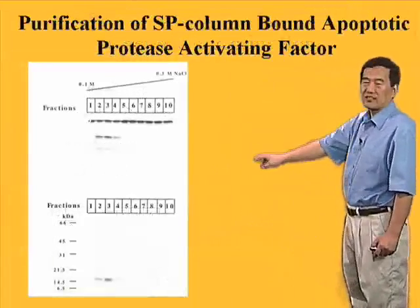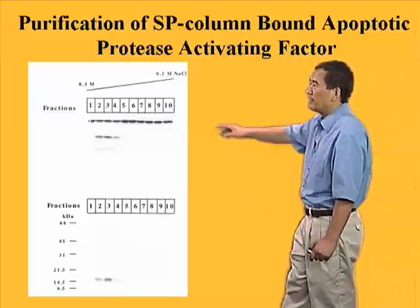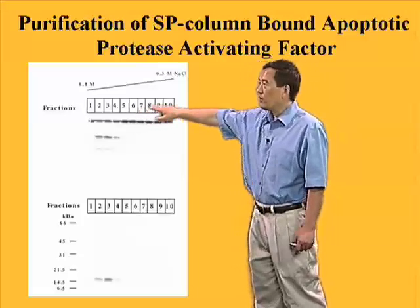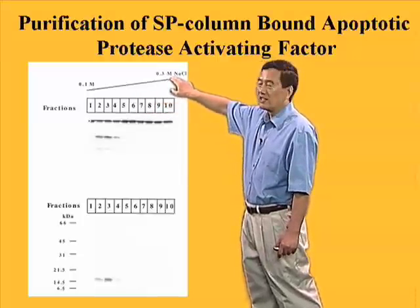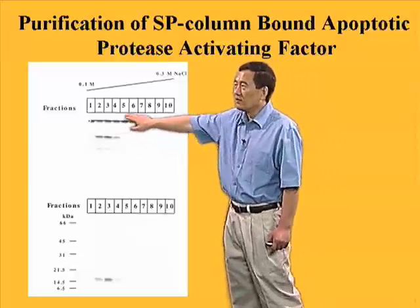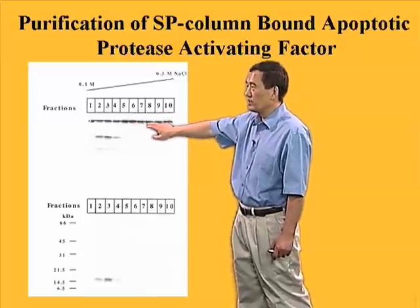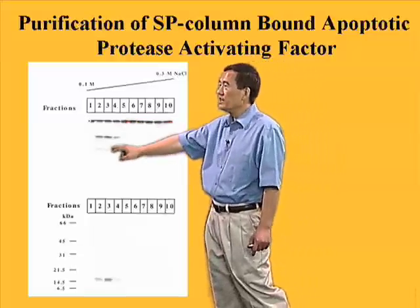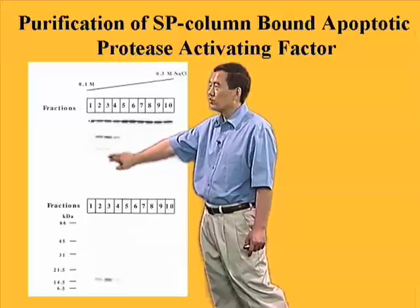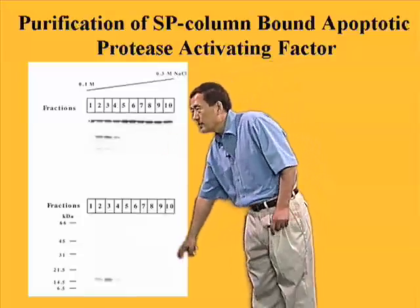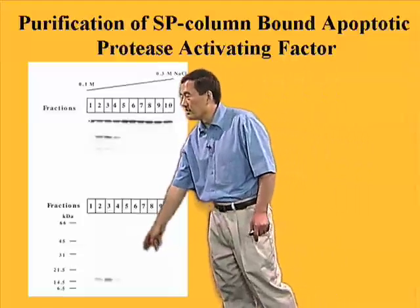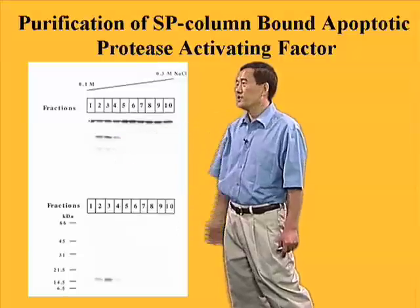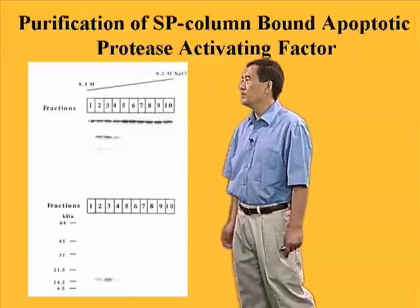Here is the first factor we purified — shown at the last column step. The numbers represent fractions collected from this column, eluted with a linear salt gradient. We measured the activity of each fraction by adding radiolabeled caspase-3 along with fractions containing the other two factors, plus dATP, and saw a nice activity peak around fractions 2 to 4. We ran these fractions on SDS-PAGE stained with silver and saw a small protein that appeared to be purified to homogeneity, correlating perfectly with the functional activity.